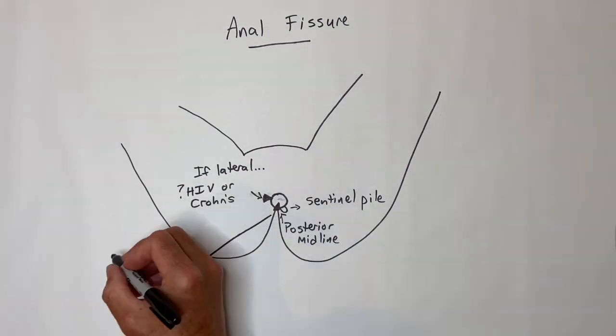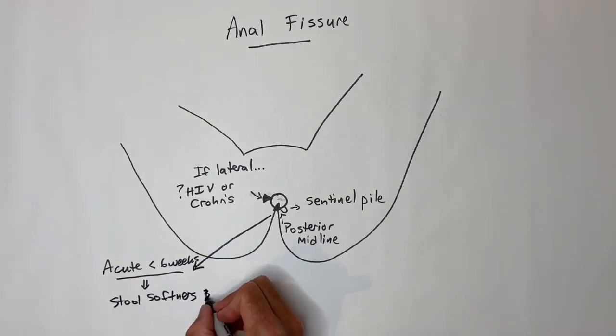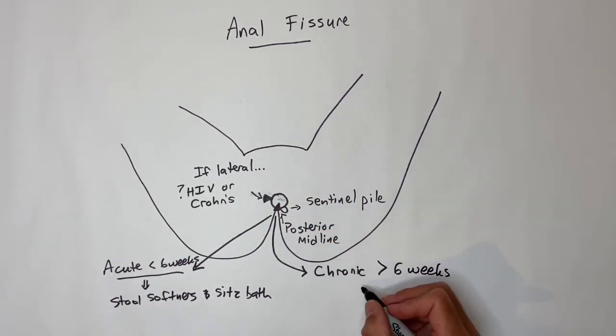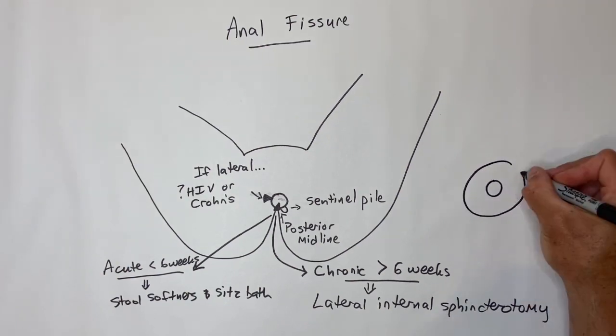In adults, if an anal fissure is acutely onset, then treat it conservatively with stool softeners and sitz baths. Once it has been present for longer than six weeks and resistant to conservative measures, then you may have to do something about it.